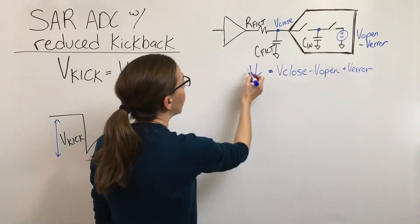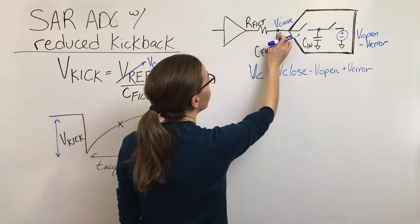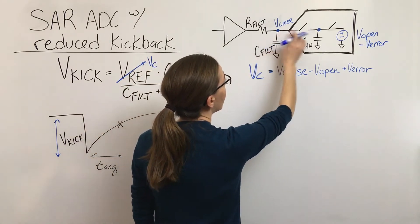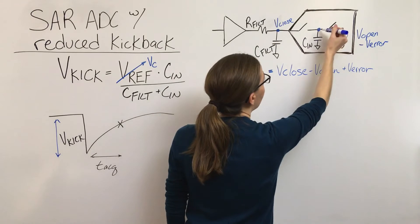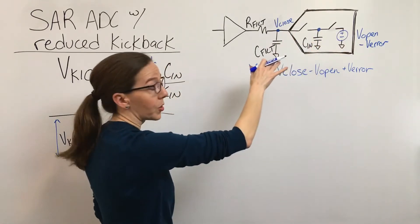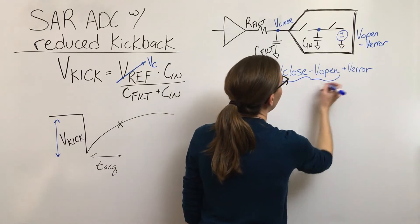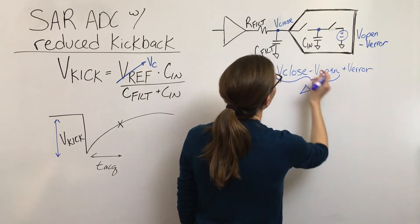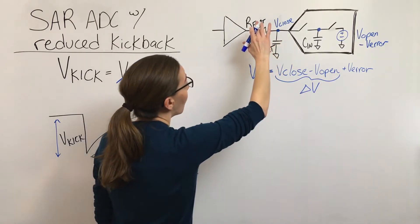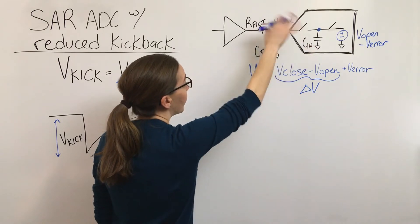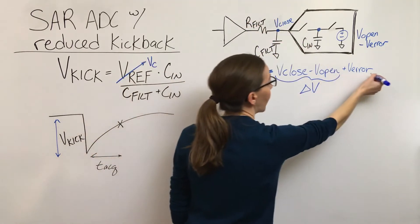All right. So basically we've got a voltage that's the difference between what's here and what's being driven here at the point when the switch closes. And so this right here is essentially what's that difference between what the voltage was at open versus when it closes. And then we've also got this error term.